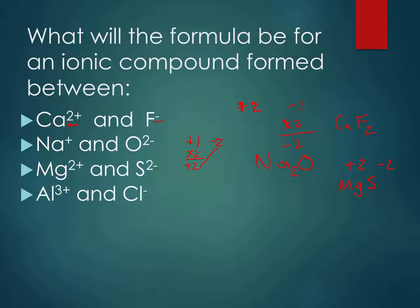Al3+ and Cl-, so plus 3, minus 1, this means I'm going to need three chlorides to get my negative 3, so that way they're the same value, so I'm going to have AlCl3.